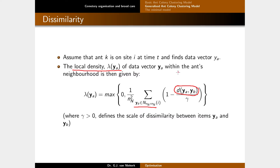We compute the dissimilarity between ya and each yb in the patch. This value is 0 if they are similar, or some positive value if they differ. We divide by a constant γ to control cluster density and number. We then subtract from 1, sum all results, and divide by the number of patch positions n², giving us the average similarity of ya to its neighborhood.